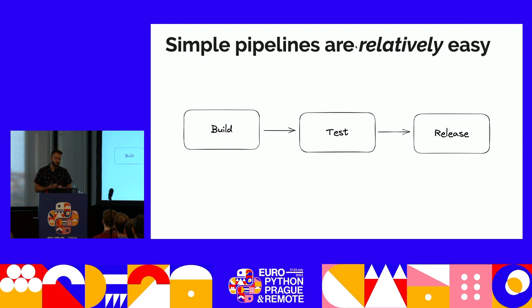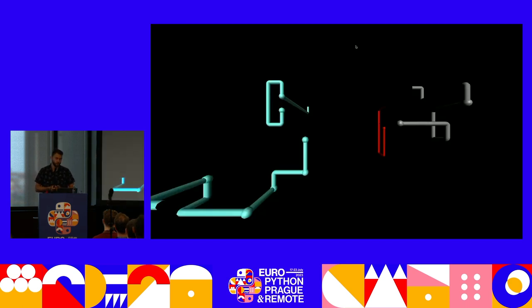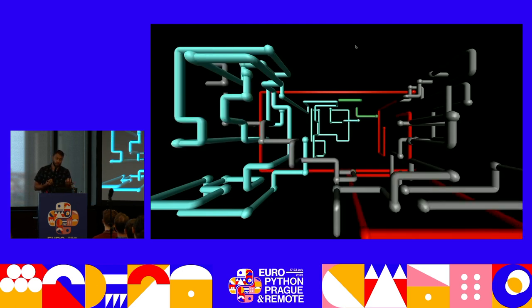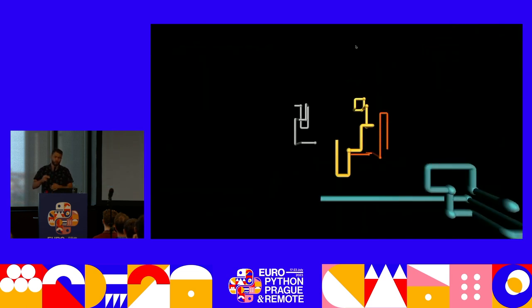Setting up a CI pipeline is not the easiest thing to do because unlike with local development, now you have to debug things running on a server that you don't necessarily control, and on top of that, there is this additional layer of complexity that you have to configure various services together using some kind of configuration format that your CI provider requires you to use.